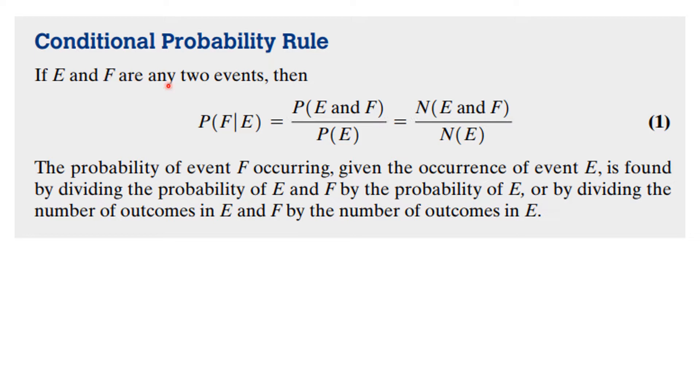If E and F are any two events, then the probability of F given E is the probability of E and F divided by the probability of E. And if we're just counting the number of ways things happen, it would be the number in the intersection divided by the total number that are in E because E is the given one.